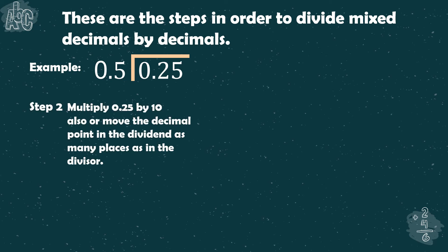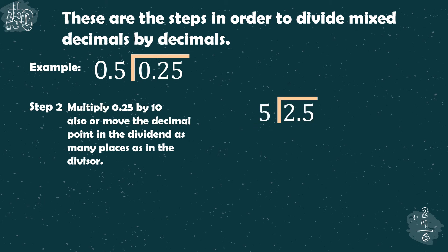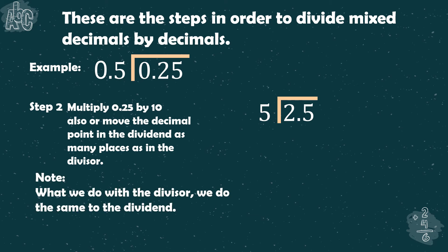Then, we also need to multiply the dividend, 0.25, by 10, or move the decimal point as many places as in the divisor. So if we move the decimal point in the divisor once, we also need to move the decimal point in the dividend once. But if we move the decimal point twice in the divisor, we should move the decimal point in the dividend twice as well. Since we move the decimal point in the divisor once, we are also going to move the decimal point in the dividend once, to get 2.5 divided by 5. Note: what we do with the divisor, we do the same to the dividend.